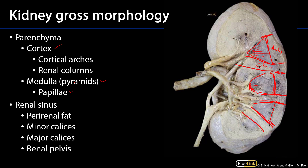The papillae are surrounded by the minor renal calyces, and the minor renal calyces coalesce into major calyces. Major calyces coalesce into the renal pelvis, which is then contiguous with the ureter. These calyces are found in the renal sinus — all of those conductive parts are within the space that the concavity of the kidney surrounds.